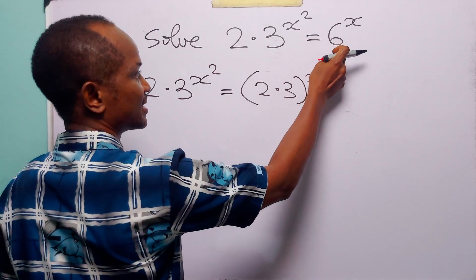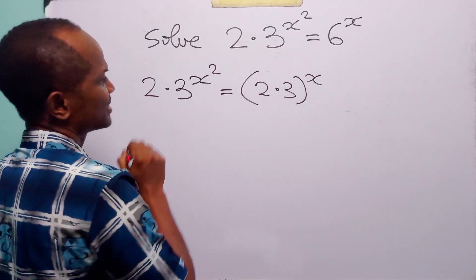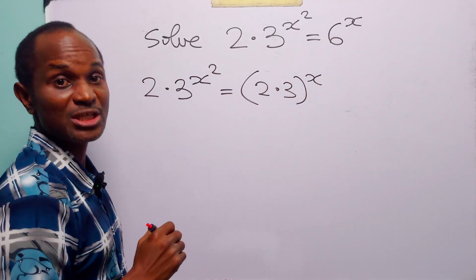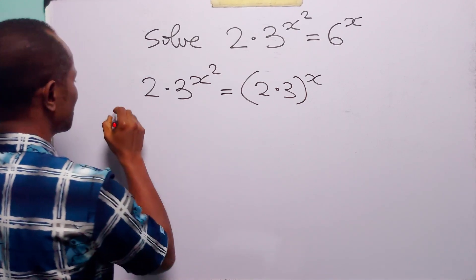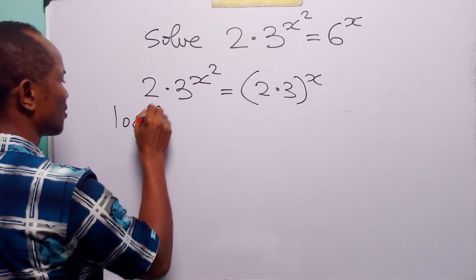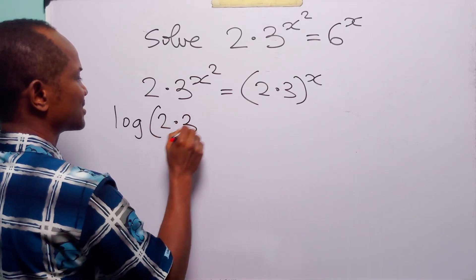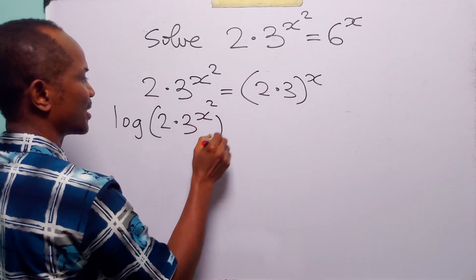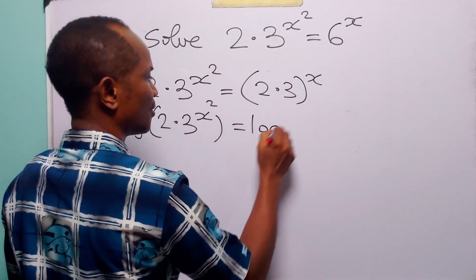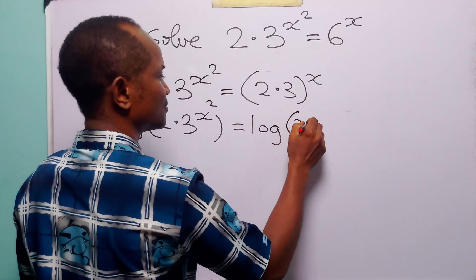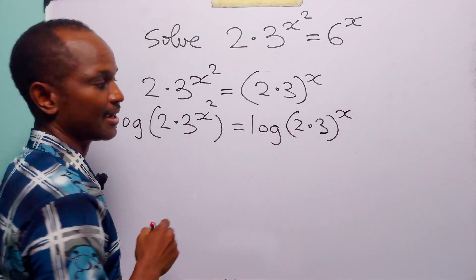You know that 2 times 3 is going to give us 6. The next thing we are going to do is to take log of both sides of the equation. When we do that, we have that log 2 times 3 to the power x squared is equal to log 2 times 3 to the power x.